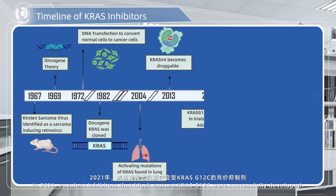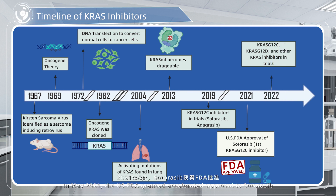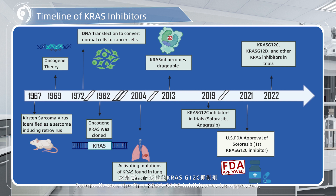In 2021, covalent inhibitors that block mutant KRAS G12C were successfully developed. In May 2021, the U.S. FDA granted accelerated approval to Sodorasib for the treatment of adults with advanced NSCLC with a KRAS G12C mutation. Sodorasib was the first KRAS G12C inhibitor to be approved, with several more in the pipeline.